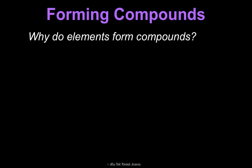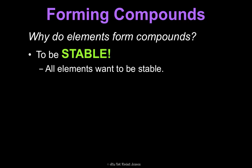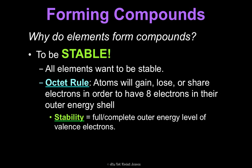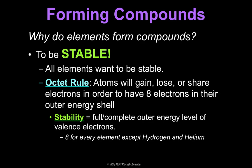When we form these compounds, why would this happen? Elements form compounds because they want to be stable. All elements want to be stable, and here's what that means: it usually means the octet rule, which states that atoms will gain, lose, or share electrons in order to have eight electrons in their outer energy shell. Stability means your outer energy level with your valence electrons should be full and complete — eight for everybody but hydrogen and helium, which only need two because they only have that one energy level.